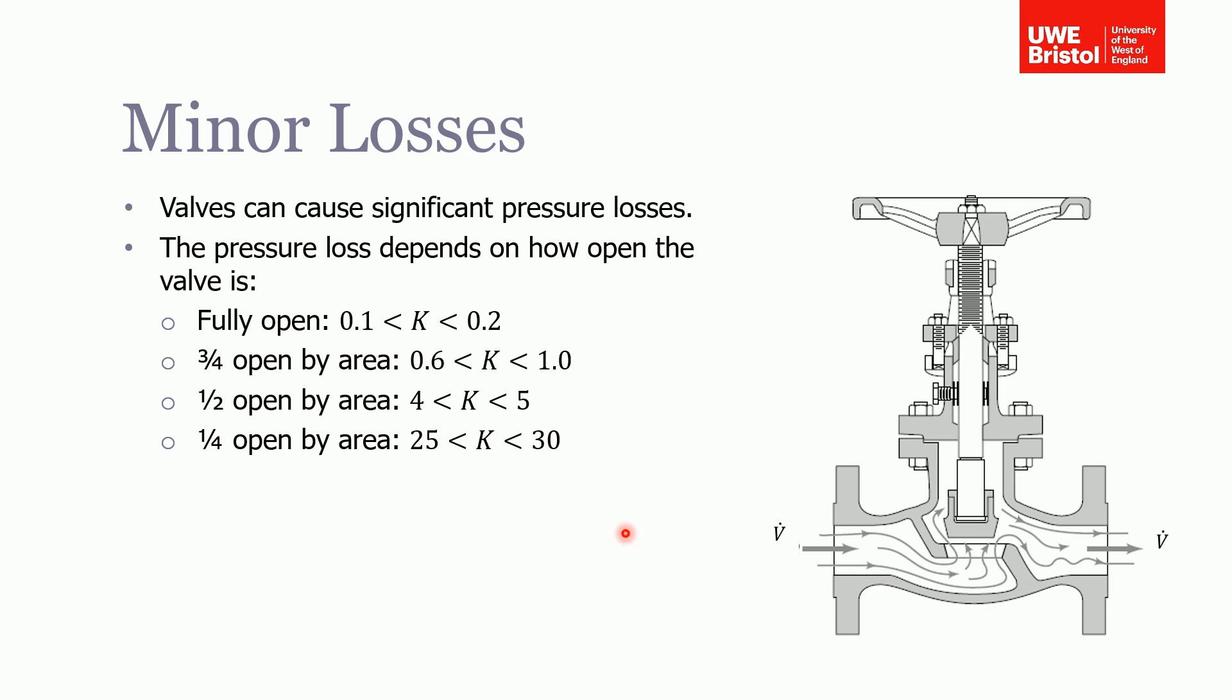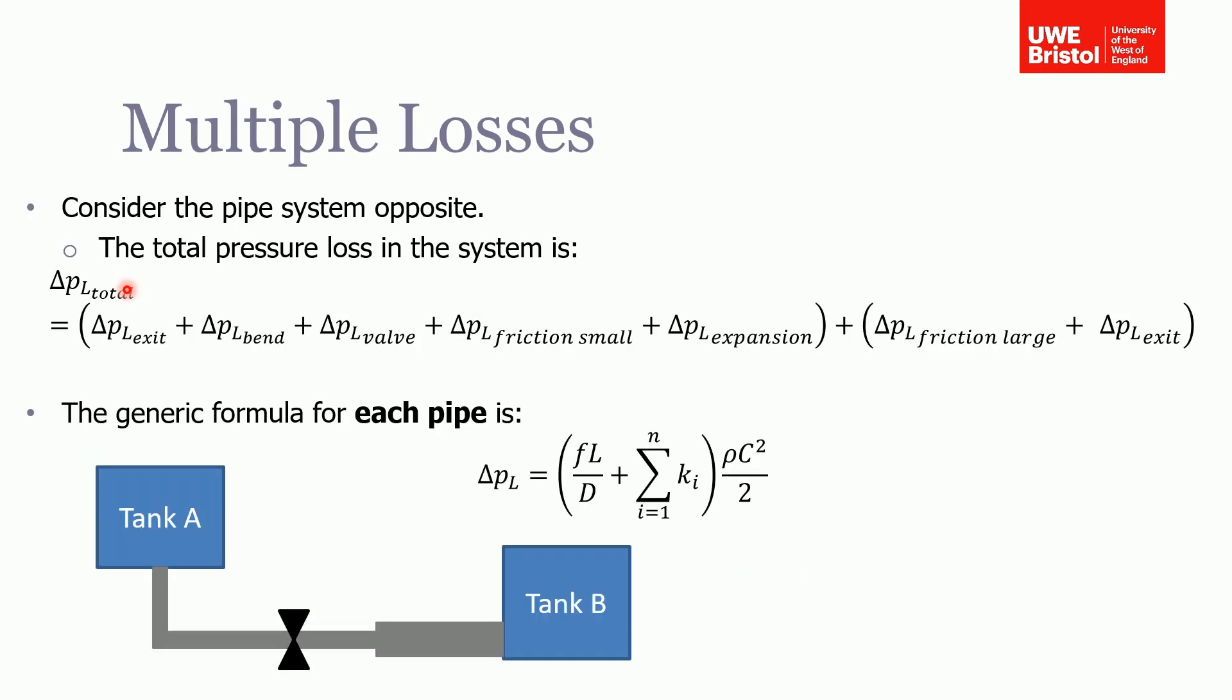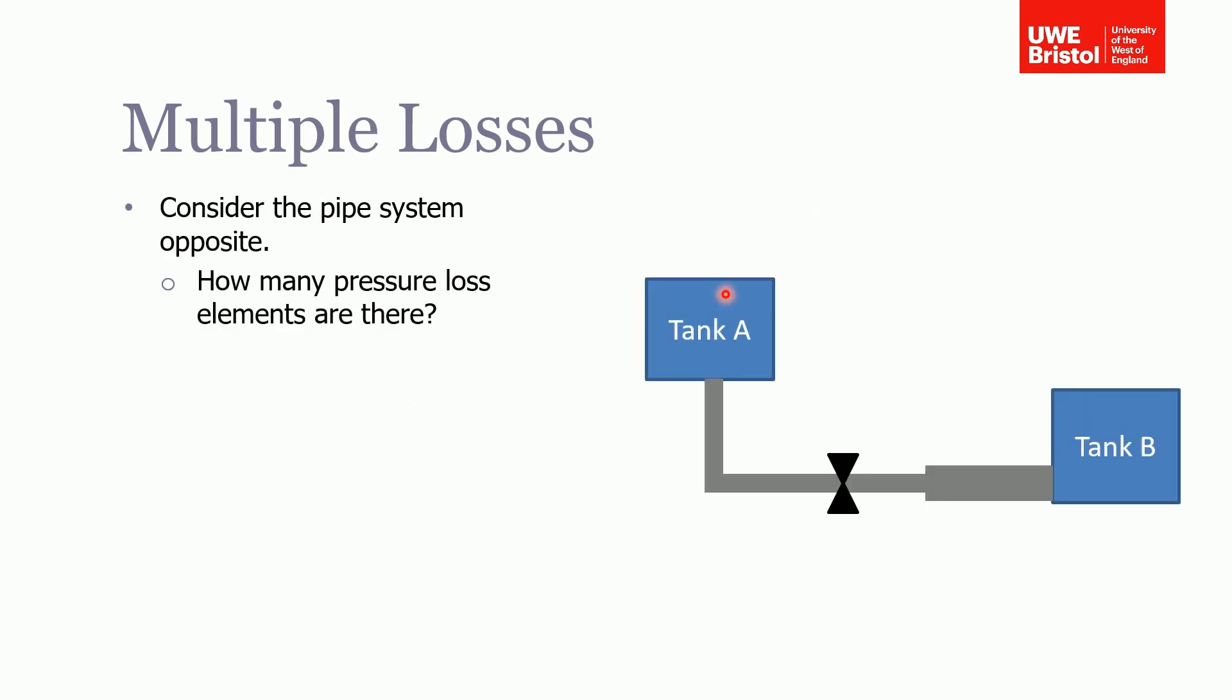So just consider this pipe system shown here in this diagram. Water is flowing from Tank A into Tank B, and it needs to overcome all the total pressure loss between the two tanks.